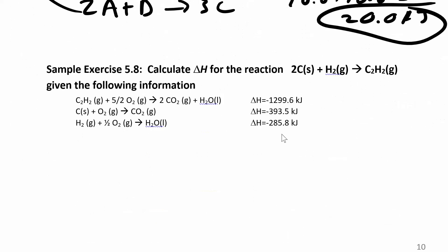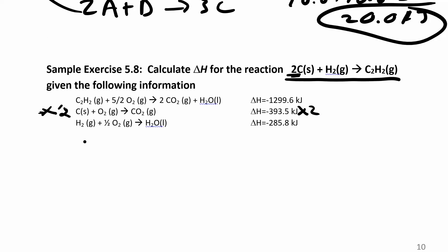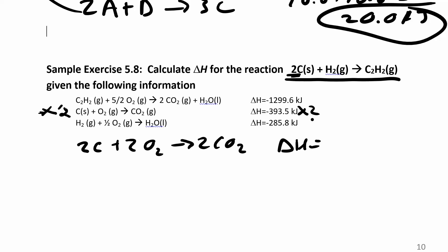Let's try another one. The reaction you're trying to build is the one that doesn't have an enthalpy, and your final answer is the enthalpy you get by adding up all the delta H's. Go reactant by reactant. I have 2C here, so I look for where I have a carbon by itself. I find it, and I want two carbons as a reactant but only have one, so I multiply by 2 and also multiply my delta H by 2. The first reaction becomes 2C plus 2O₂ gives 2CO₂, and my delta H is 2 times negative 393.5 kilojoules. Don't drop your negative signs.